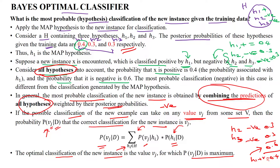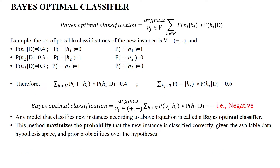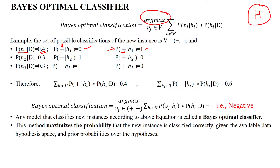This is how to find the optimal solution using the Bayes Optimal Classifier. We identify the maximum value from the set of values in the hypothesis space H. The probability of H1 given D is 0.4 as per the previous example. For the negative class, P(negative | H1) is 0 since H1 classifies positive, so we consider it as 1 for positive and 0 for negative. Here 0 means the data does not belong to that class, and 1 means it does.